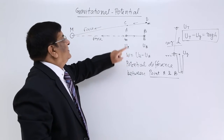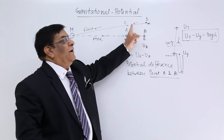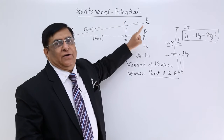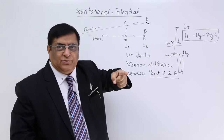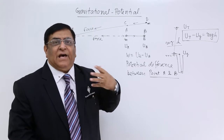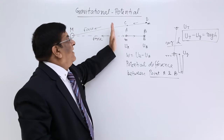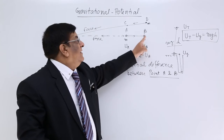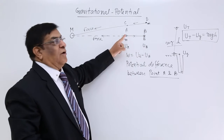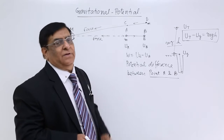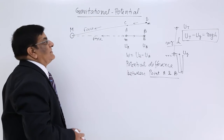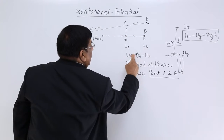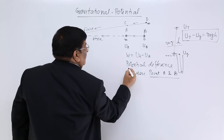Every particle has energy, and between any two points, if we want to move it in the gravitational field we have to do work on it — either we do the work, or it does the work. If I am doing work on it, that is positive work; if it is doing work on me, that will be negative work. The difference of energies at two points is known as potential difference.